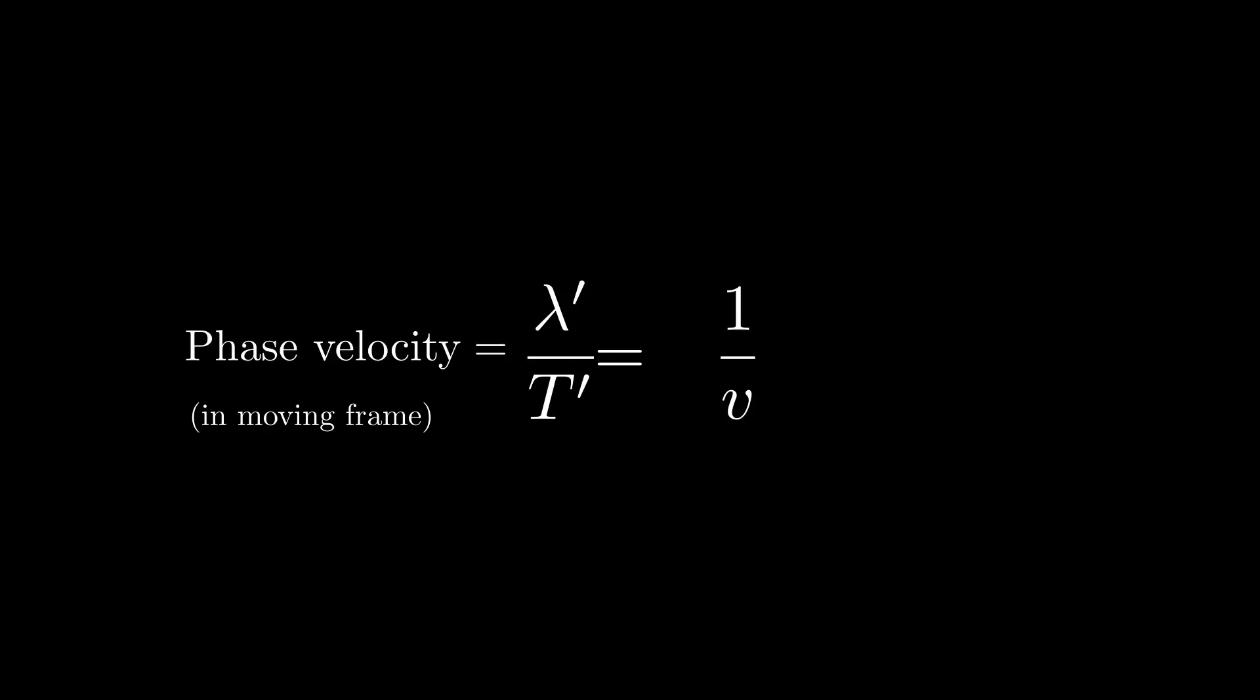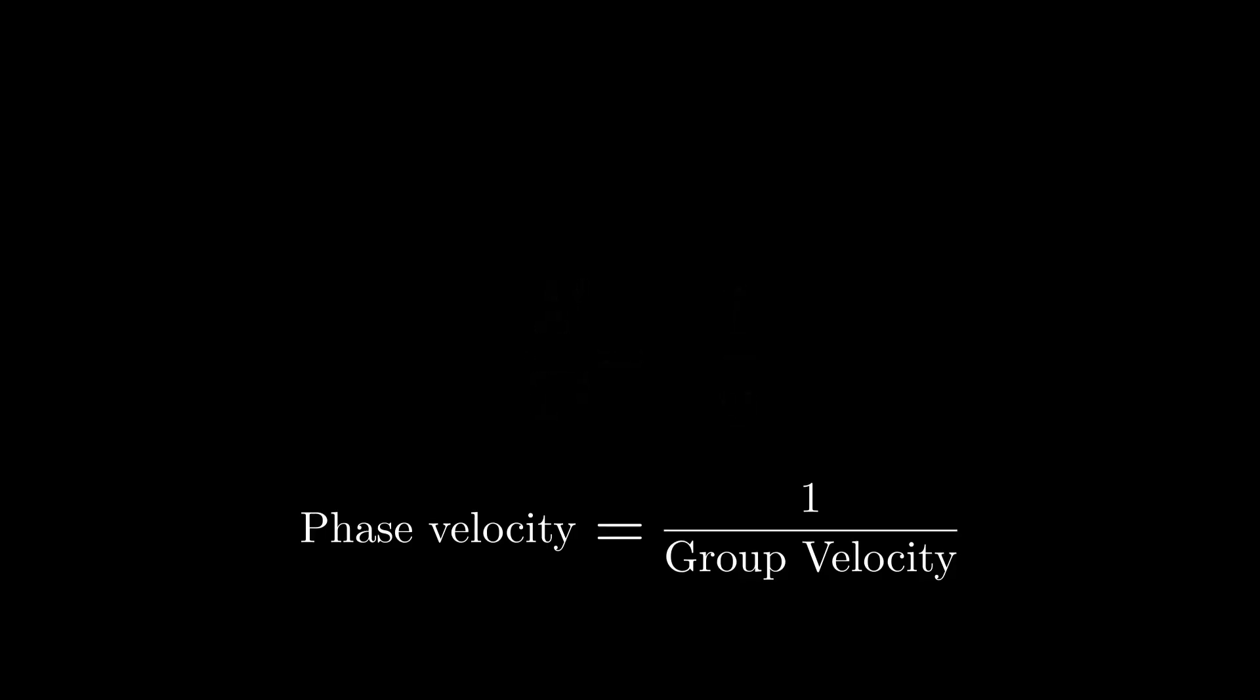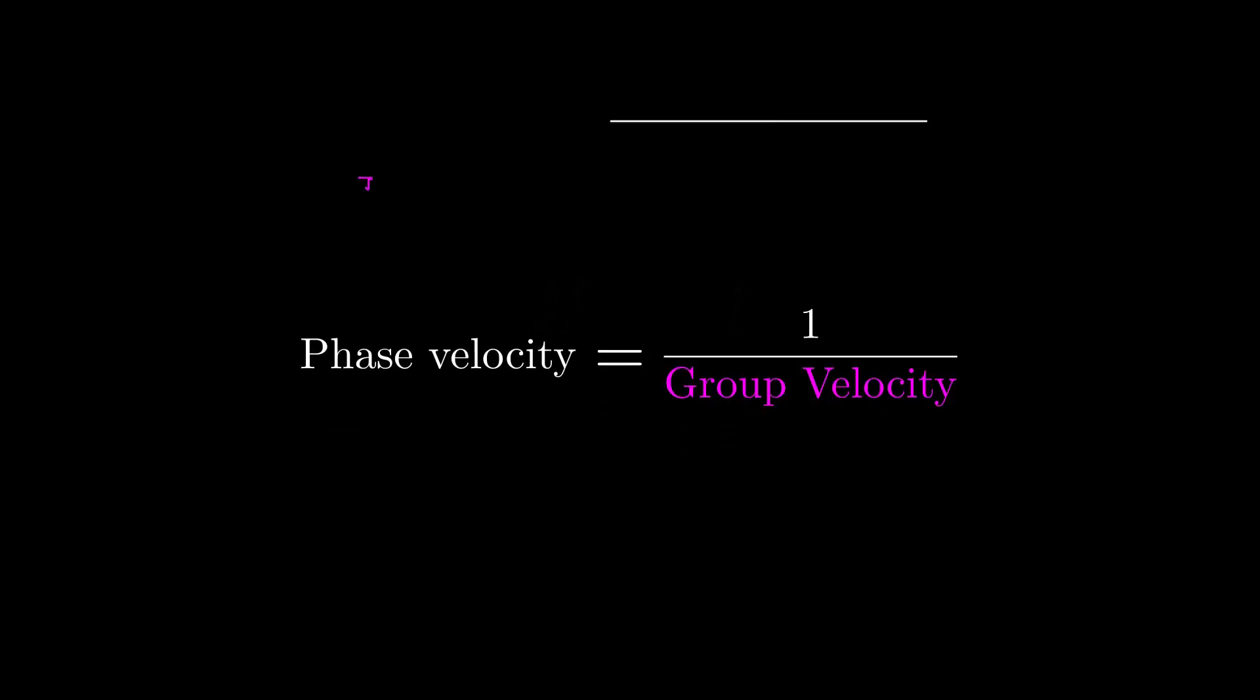Secondly, we recall that the velocity of a wave packet is called group velocity, and it's obtained from the so-called dispersion relation, like this. In words, the group velocity is the differential of angular frequency with respect to the wave number K. We do not prove this subtle but well-known fact.